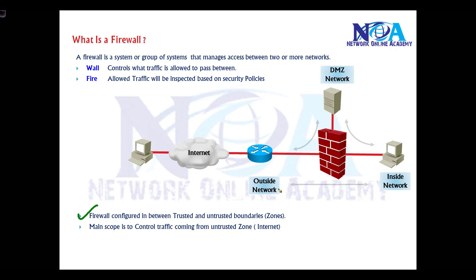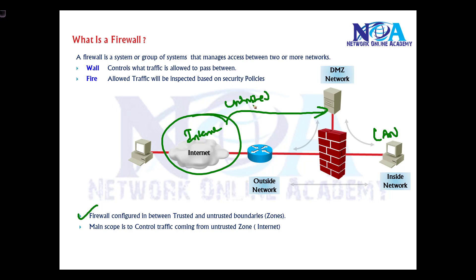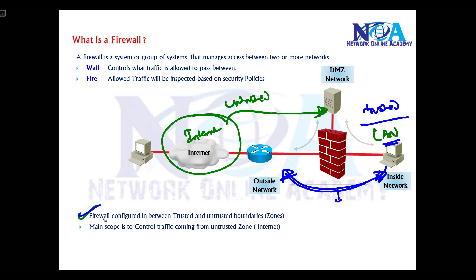A firewall is generally configured between trusted and untrusted boundaries — especially between the LAN and the internet. Any traffic coming from the internet is considered untrusted, because we don't trust anything coming from the internet. Traffic initiated from the LAN is considered trusted. All traffic going between these two zones should be monitored and inspected, and the main scope of the firewall is to control what traffic from the internet is allowed into the LAN or DMZ.